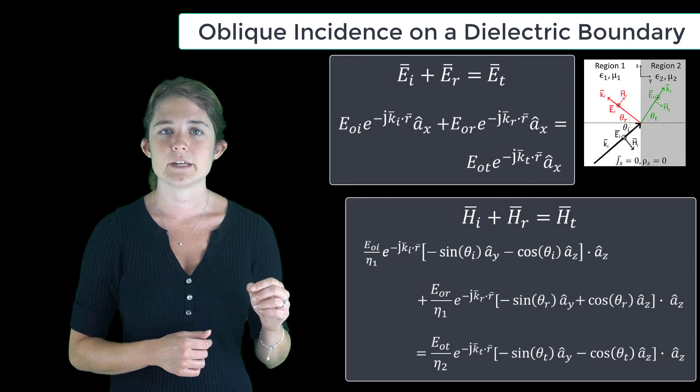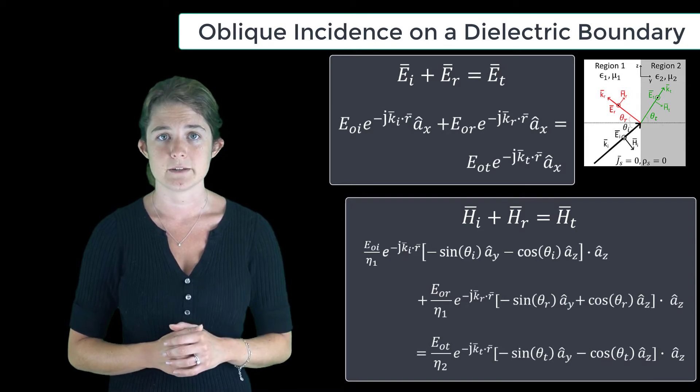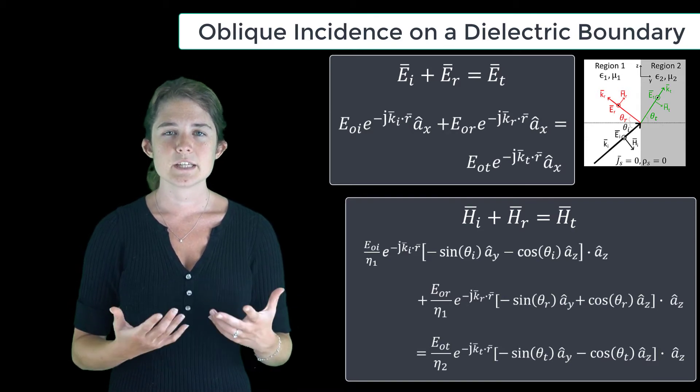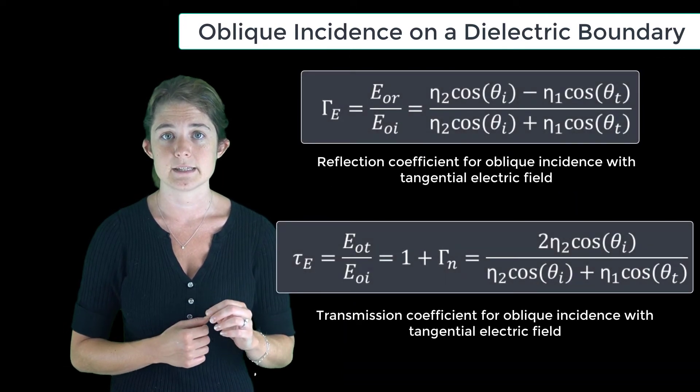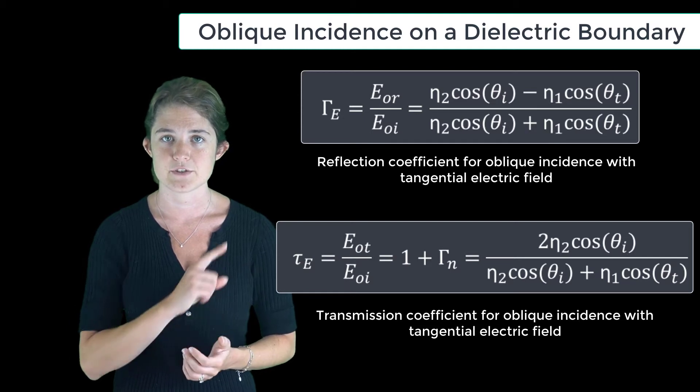and also to break out the tangential components of the magnetic field in each wave. These formulas can be combined to give the reflection and transmission coefficients for the oblique incidence tangential E case, as shown here.